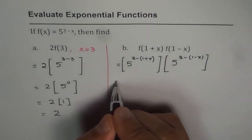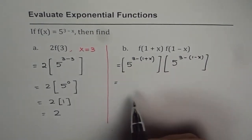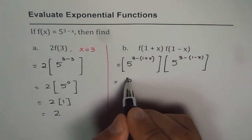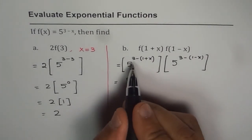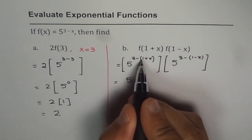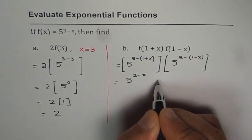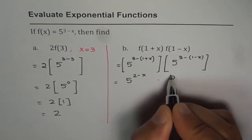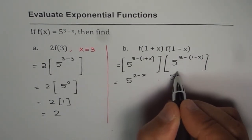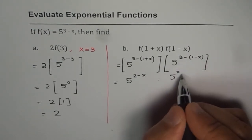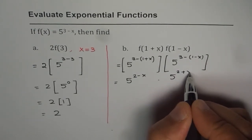So let us simplify this and then we will multiply. So we have 5 to the power of, let us open the bracket, 3 minus 1 is 2, minus and plus becomes negative, so it becomes 2 minus x times. Here we have 3 minus 1 is 2 and minus and minus becomes plus, so we have 2 plus x.